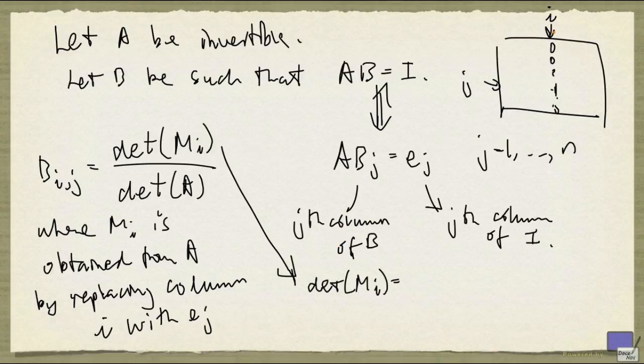Because everything is 0 except in the jth entry of column i, expanding the determinant along column i will give me this, minus 1 to the j plus i times Aj vertical bar i.